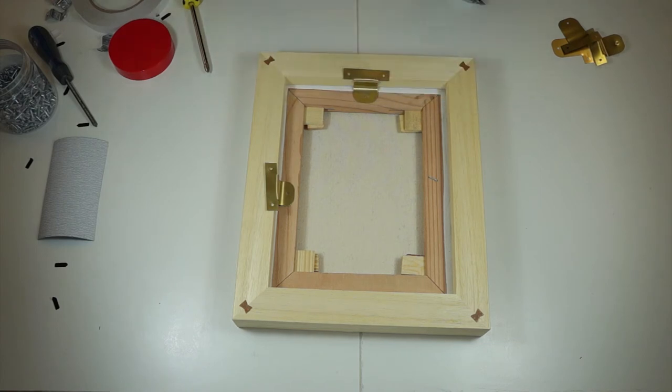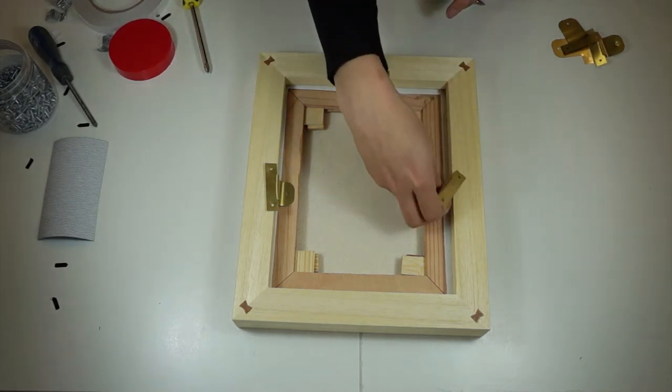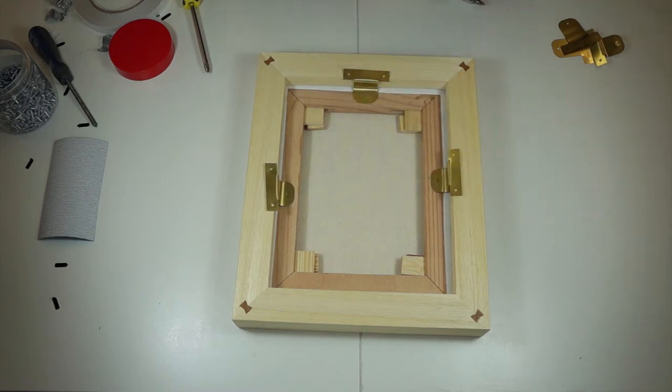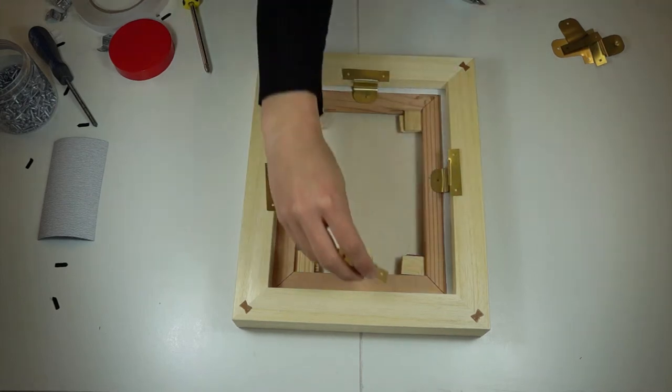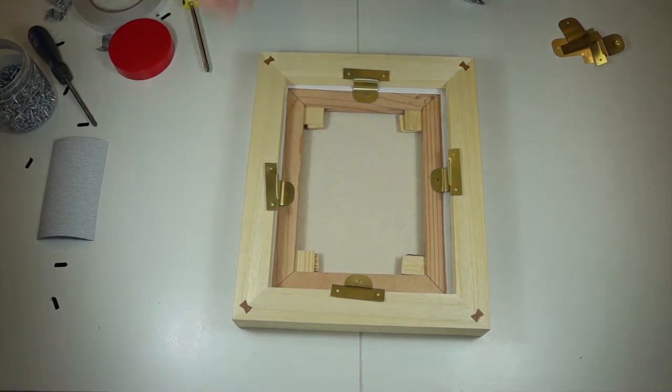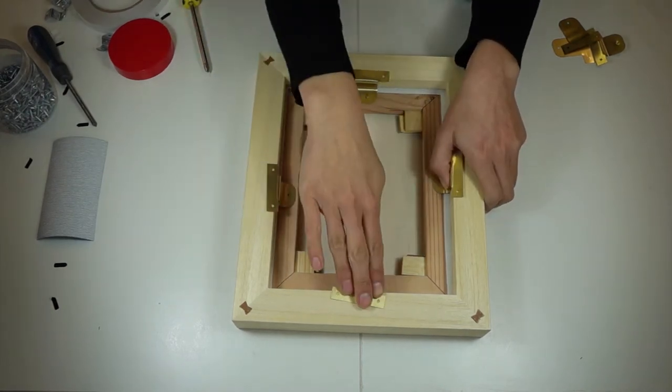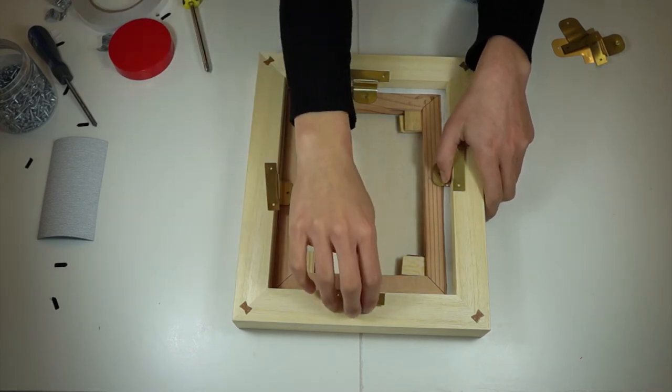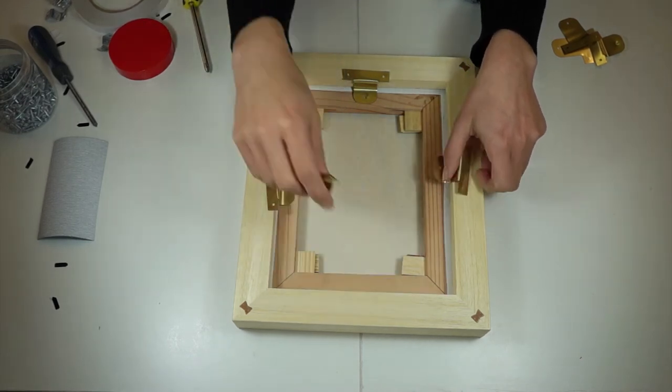And as with all the 8x10 canvases I've been using as examples, you probably only need one flexi plate on each side. Once you've done that your canvas will be secure in its frame and then you just have to think about whether you want to hang it with mirror plates, picture cord or picture wire.